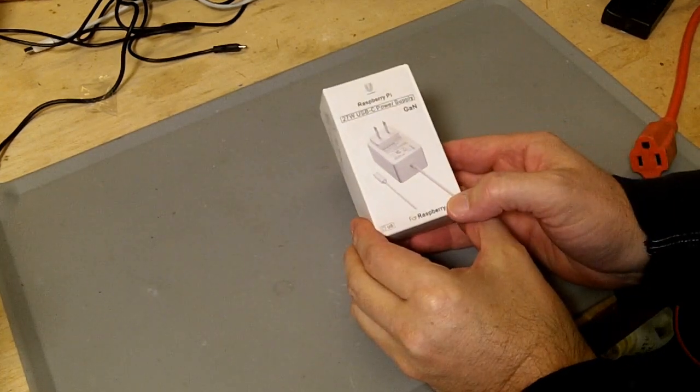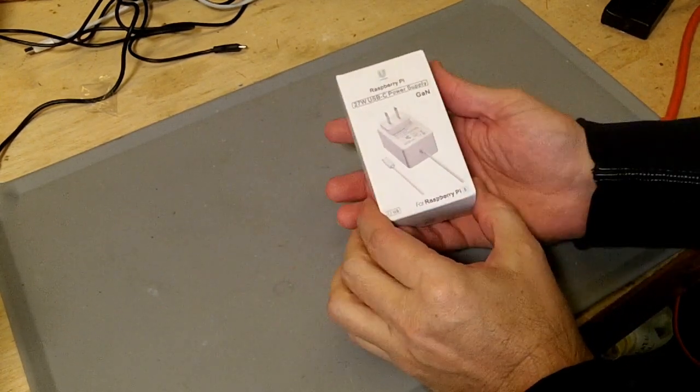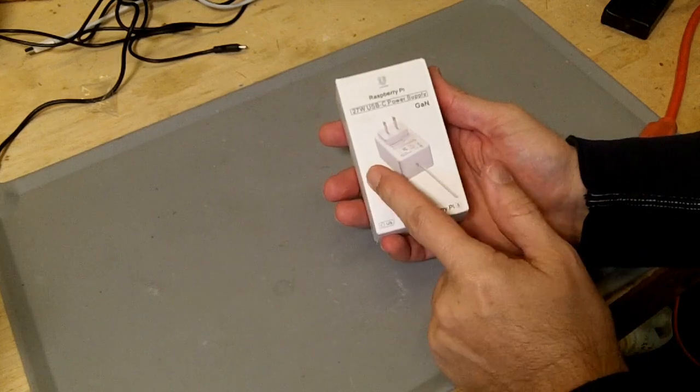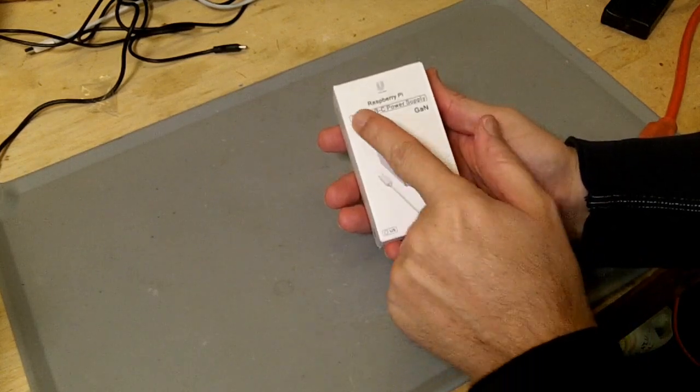This is an Iunker Raspberry Pi power supply. It's basically a GAN power supply, USB-C captive cable, 27 watts.